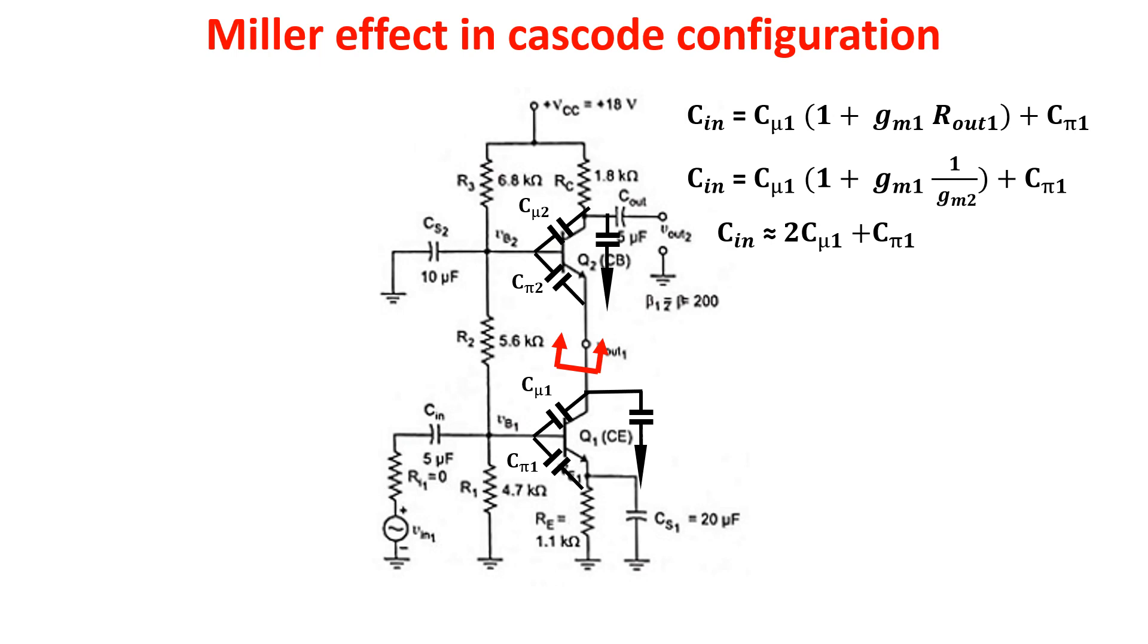The total gain is the gain of the common emitter times the gain of the common base, so the total gain is minus GM2·RC. As you can see, we have the same gain of a common emitter amplifier but more bandwidth, and this explains the success of this configuration.